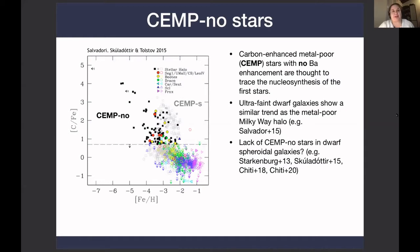Also on this plot are dwarf galaxy stars, color-coded by the size of the galaxy. We can immediately see that the smallest ones, the ultra-faint dwarfs in yellow and red, have a very similar overall trend as the Milky Way halo. But as we go to larger dwarf galaxies, these stars become more and more difficult to find, and this has inspired discussion on if there is a lack of these CEMP-no stars in dwarf spheroidal galaxies or not.